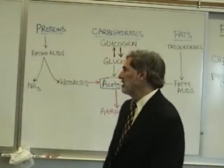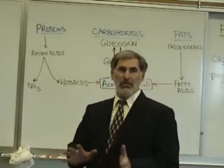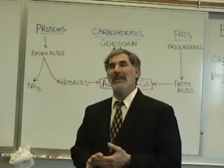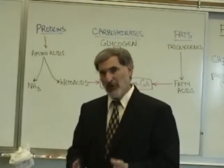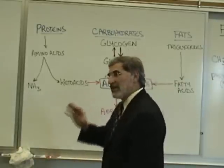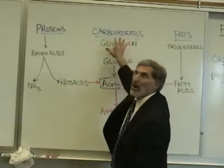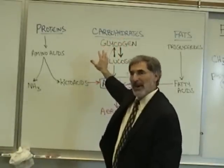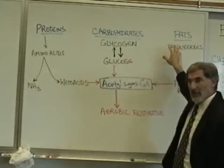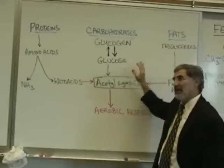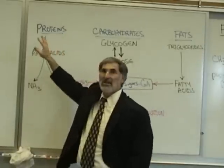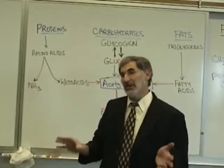Living things, including humans, can break apart three principal types of organic compounds to release energy in order to make ATP. Living things primarily break down carbohydrates — sugars — as a source of energy. But they also break down some fats to release energy and make ATP, and thirdly, they break down very small amounts of proteins to release energy and make ATP.